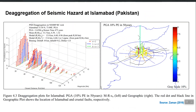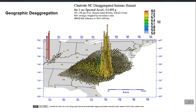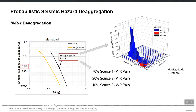Another representation of de-aggregation results is a 3D graph. This 3D graph can be plotted on the map and also separately. On the y-axis you have the percentage contribution to hazard. Let us say my PGA at this defined hazard level comes out to be 0.5 G, which is the spectral acceleration at some time period.